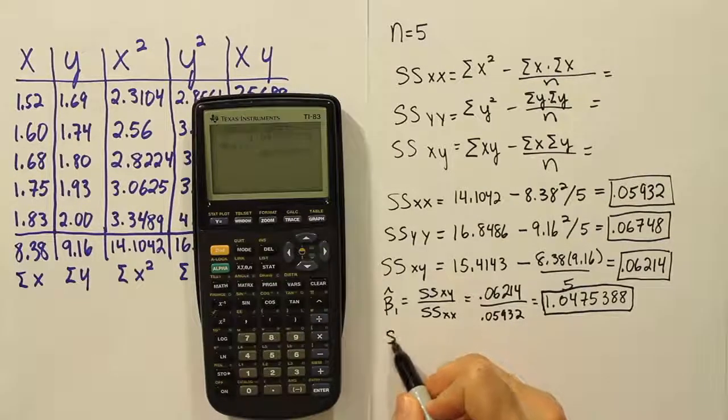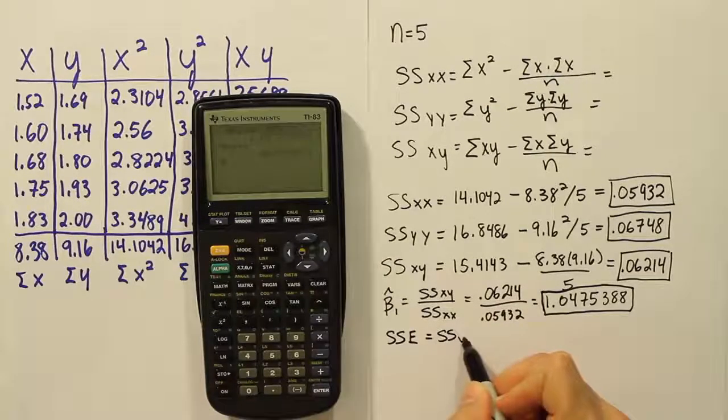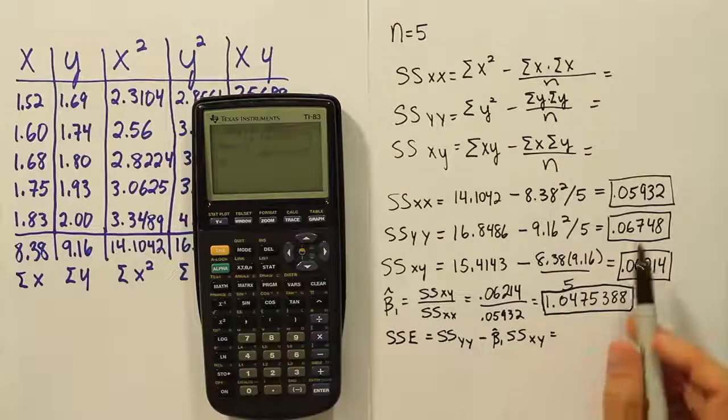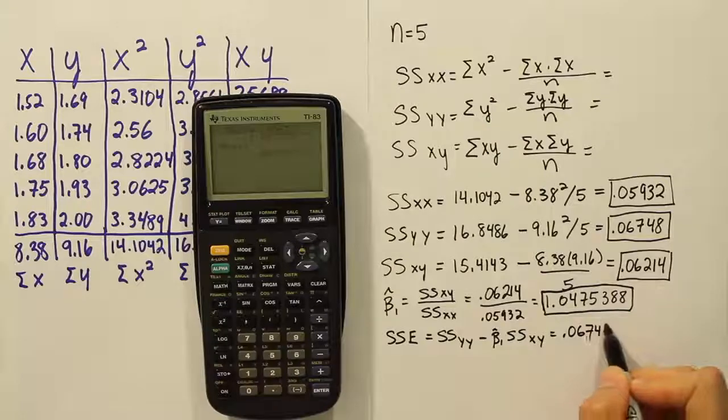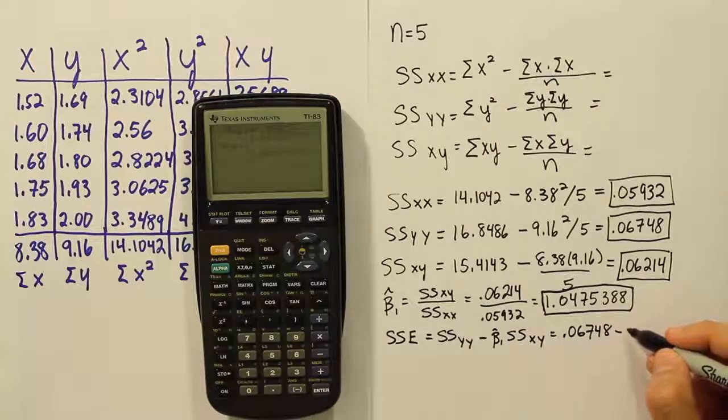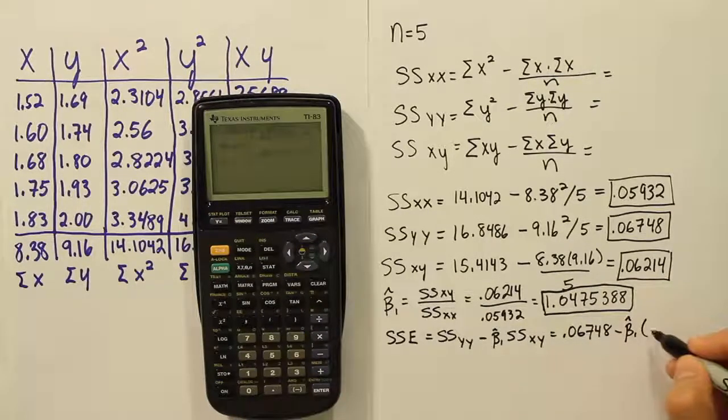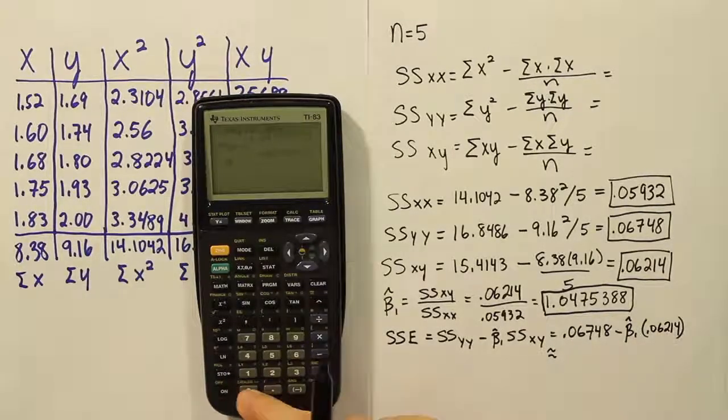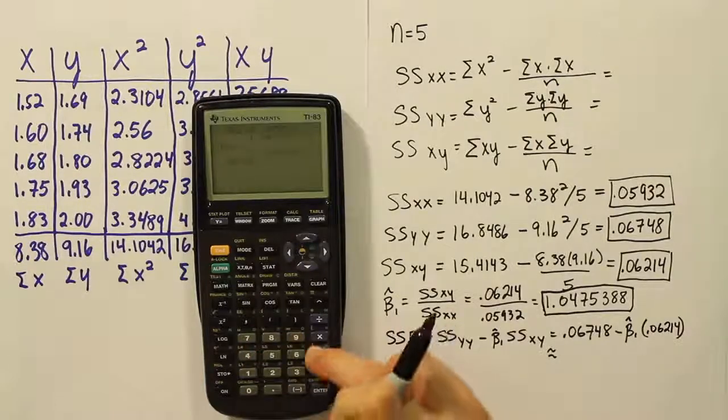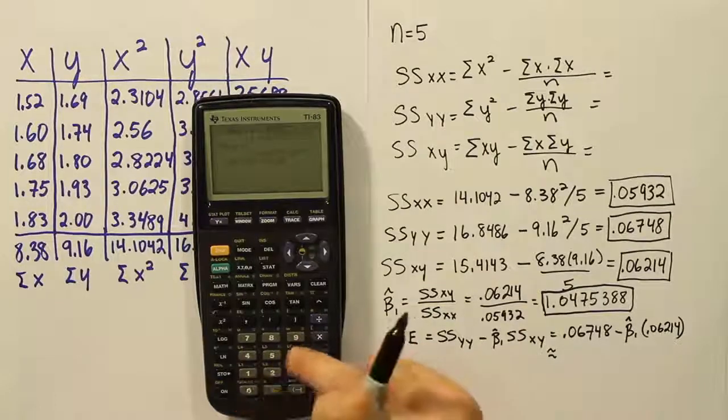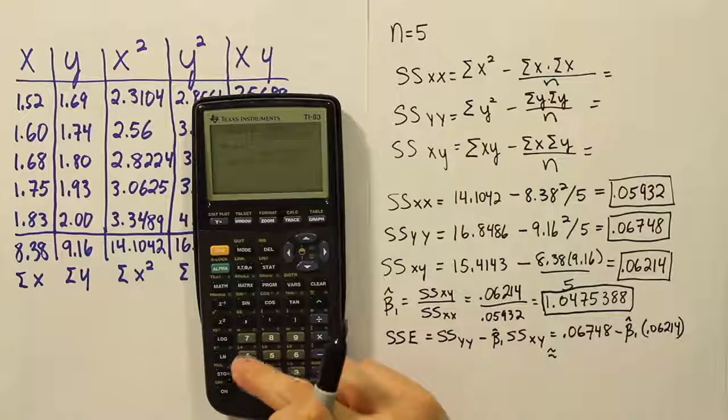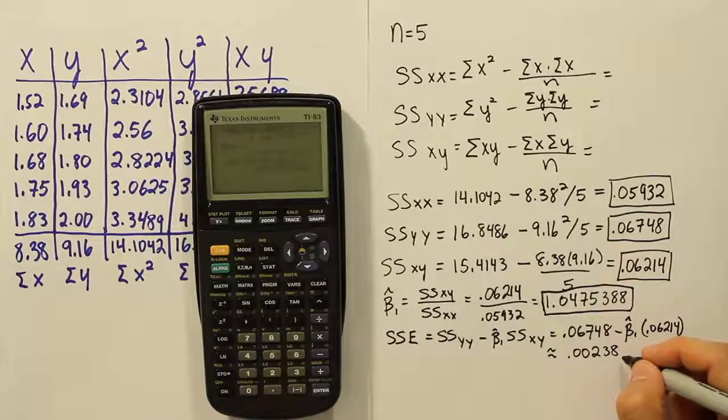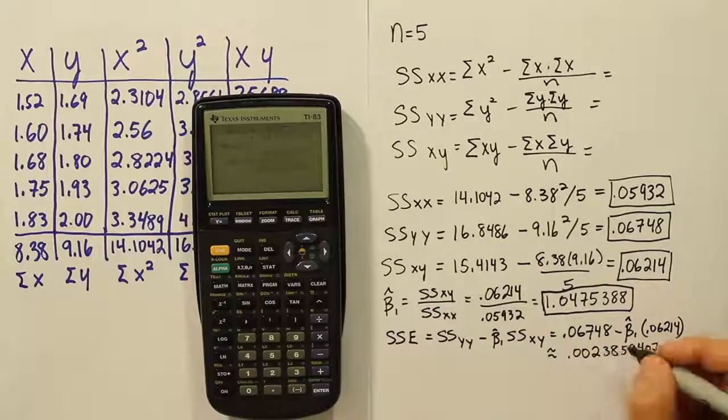All right, our next step of the process then is to come up with SSE. And SSE has a special formula. It's SSYY minus the slope estimator we just calculated times the mixed term SSXY. And the YY part is 0.06748 and then minus the number we just got for the slope. I'm just going to use the symbol for it if you don't mind. And then the mixed term is 0.06214. So that's it. And when you work all that out, let's see what that gives us. So I'm going to have 0.06748 minus the value I stored in my calculator, the slope, times 0.06214. And when I hit enter, I get approximately 0.00238594. So that is your SSE approximately.